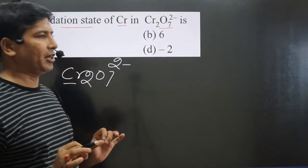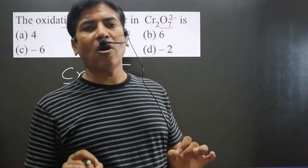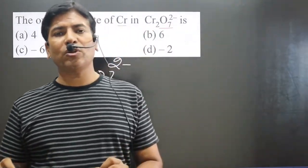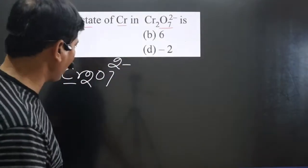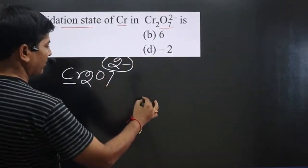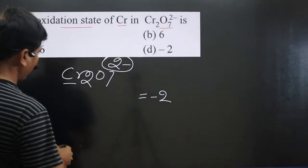Pay attention very carefully. We have learned that the total oxidation number of all elements in a given polyatomic ion is equal to its charge. The charge here is -2, so we can write the equation equals -2.